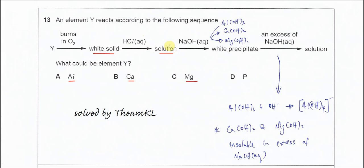Now after that the solution is added with sodium hydroxide. After sodium hydroxide is added, only the aluminum, calcium, and magnesium solutions will form white precipitate. So it will form aluminum hydroxide, calcium hydroxide, and magnesium hydroxide. Only these three.